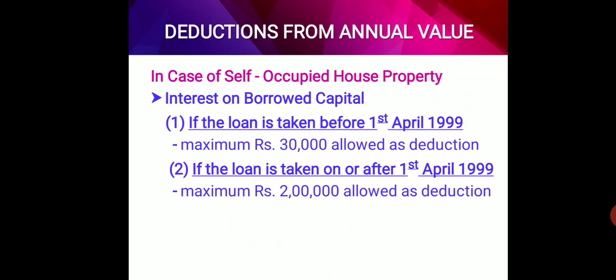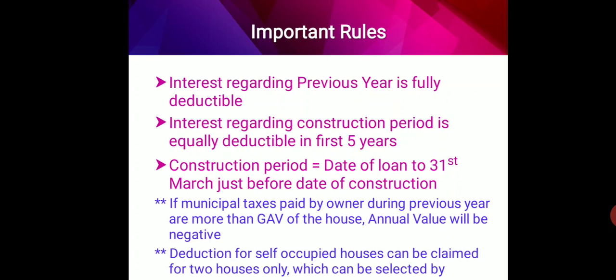For self-occupied house property, interest on borrowed capital is allowed as deduction. There are two options: if the loan is taken before 1st April 1999, maximum allowable deduction is 30,000 rupees; if the loan is taken on or after 1st April 1999, maximum deduction allowed is 2 lakh rupees. Important rules: interest regarding the previous year is fully deductible, and interest regarding the construction period is equally deductible over five years.